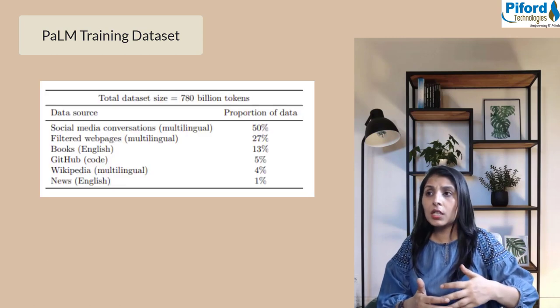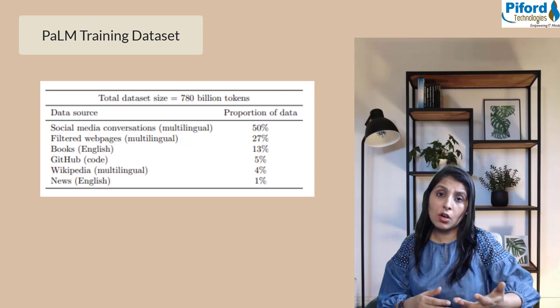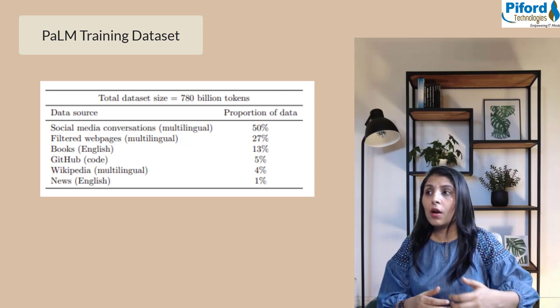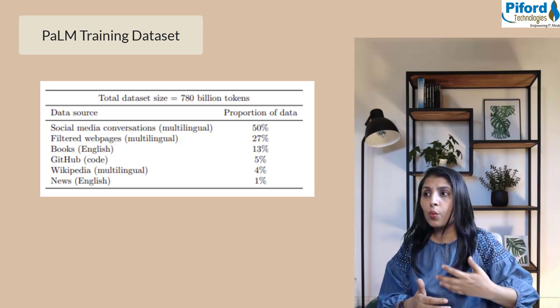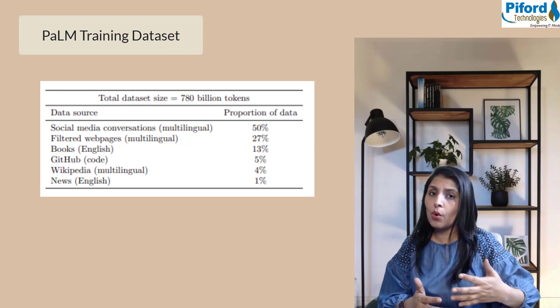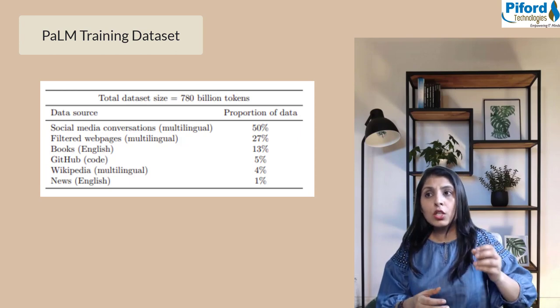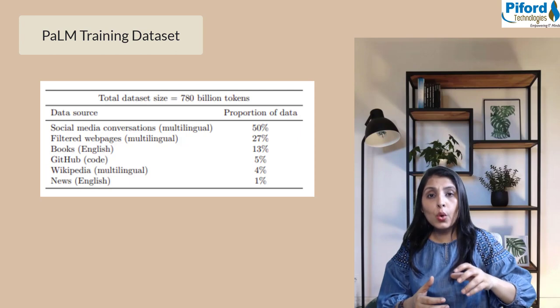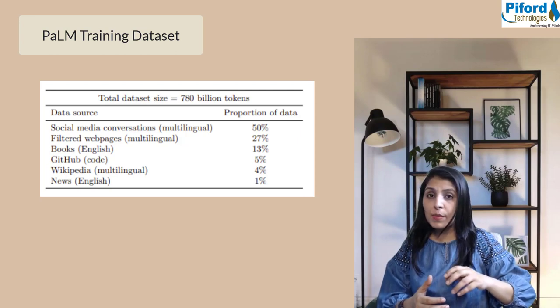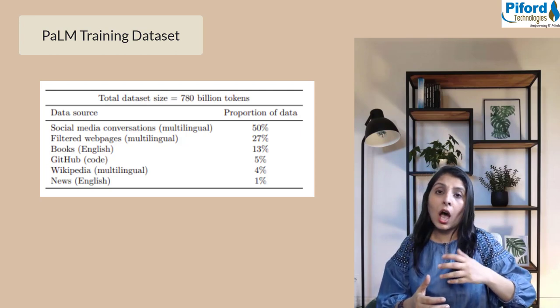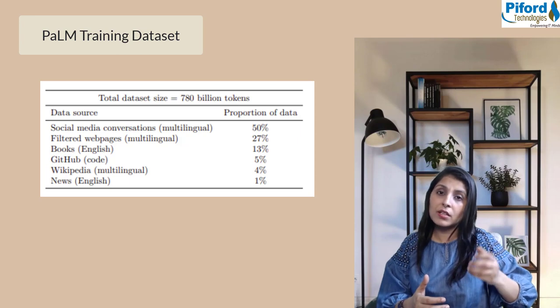The training dataset of PaLM consists of high-quality web documents, social media conversations in different languages, books, GitHub code, Wikipedia, and many more with lossless vocabulary. This lossless vocabulary is known for preserving whitespaces and splitting out-of-vocabulary Unicode characters into bytes.